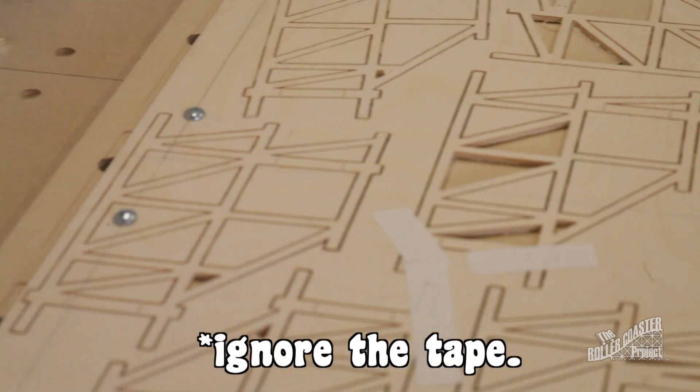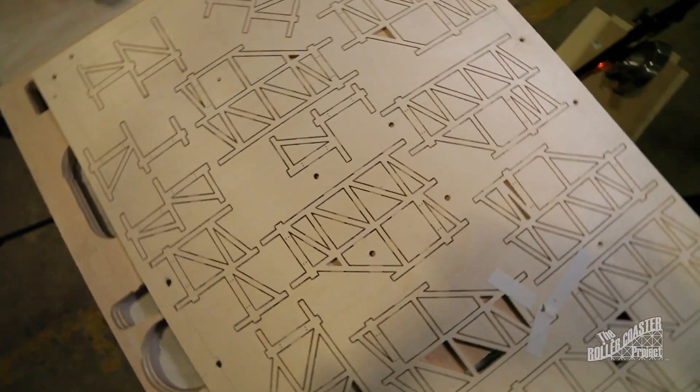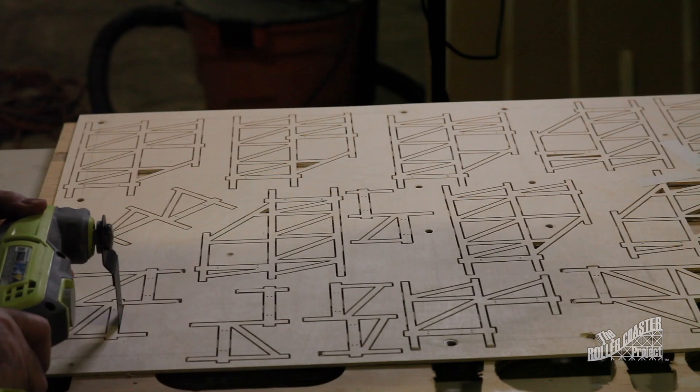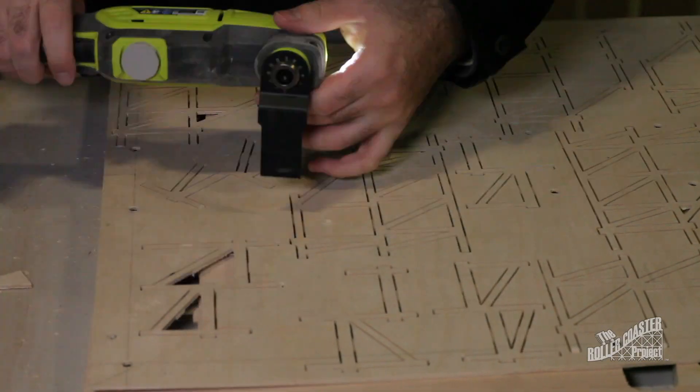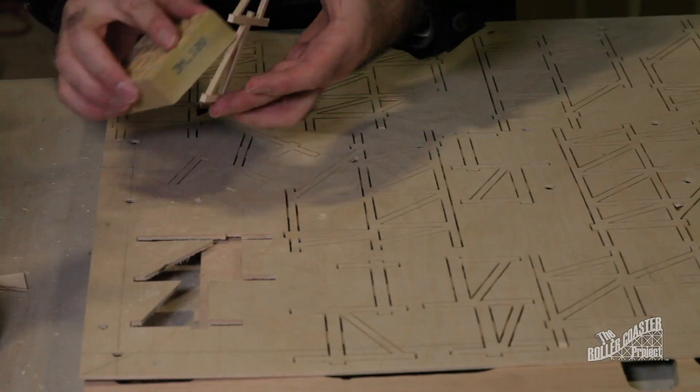Once the supports were cut, I removed the plywood from the CNC and started with my oscillating tool to cut the holding tabs. This took a while, but didn't require too much sanding to clean up the edges.